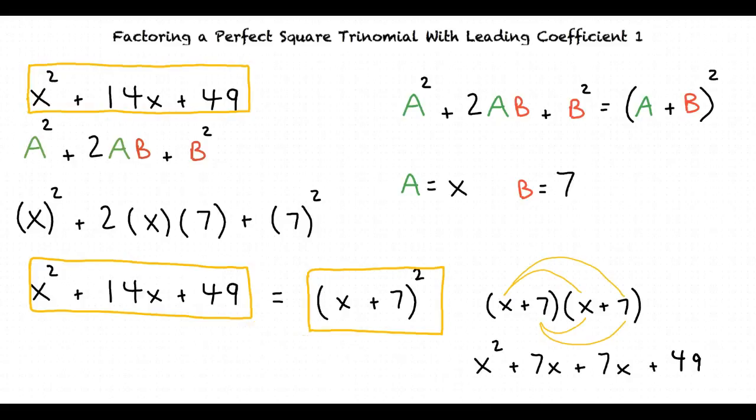Alright, so to factor a perfect square trinomial, I can begin by looking at the two possible formulas. After deciding which formula to use, I can start identifying my a and b values. Once I identify my a and b values, I can substitute them into the formula. And finally, I can use the FOIL method to make sure that my answer is correct. That's correct.